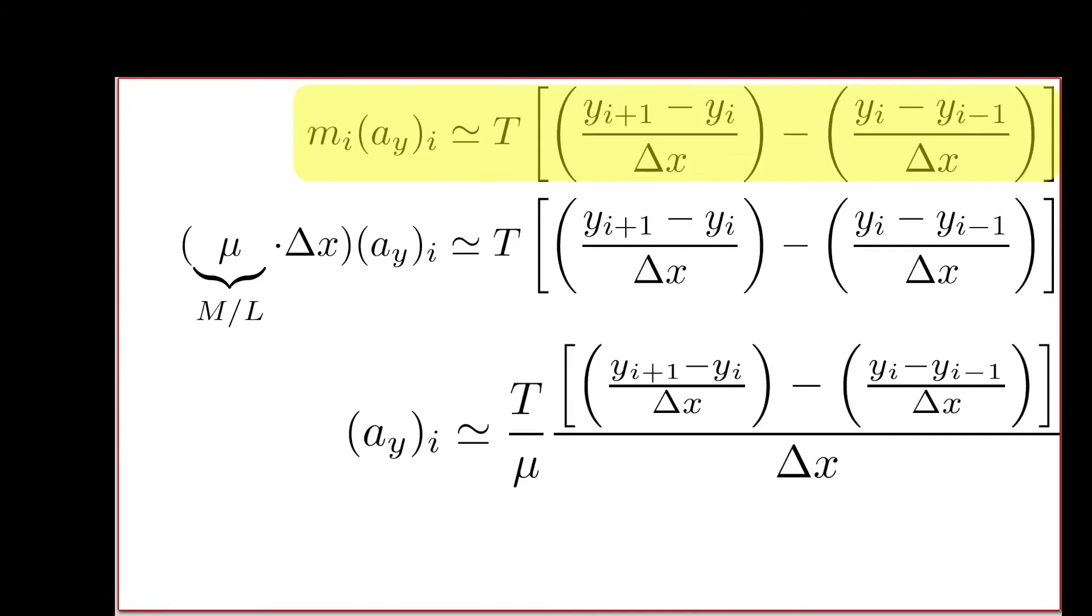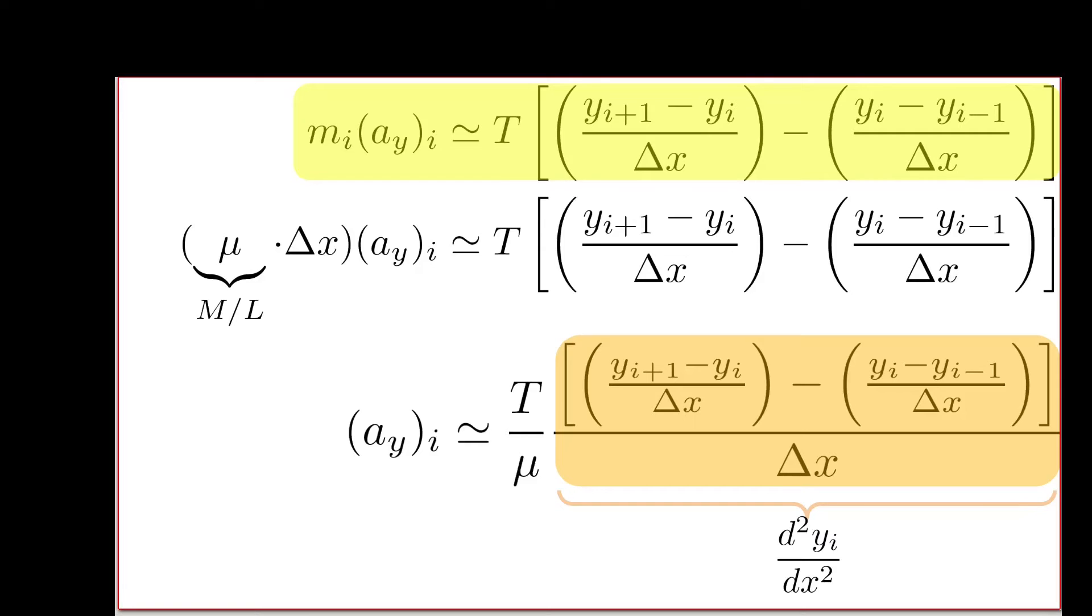Consider what this orange highlighted quantity means. I see a change in y over a change in x, that's a slope, minus slope on the left, divided by the distance between those two slope segments. So this is the change in slope per unit length. That's the change in the change in height per unit length. This is the curvature of the string locally. It has the form we expect for a derivative, a second derivative, because we have a change in change here with our two deltas. If we write this in derivative notation, at the i-th location, this is the second derivative of the height of the string with respect to distance along its length.